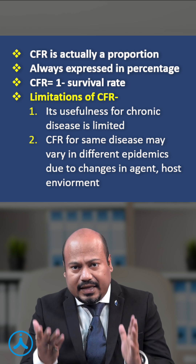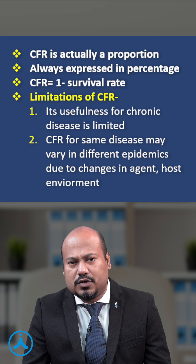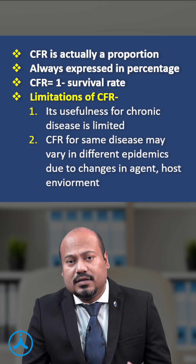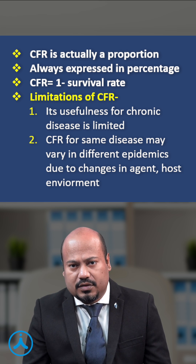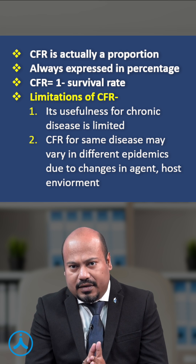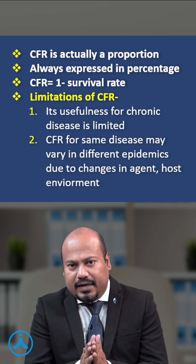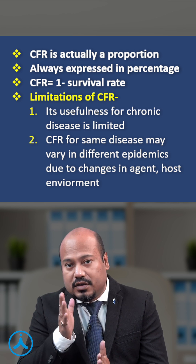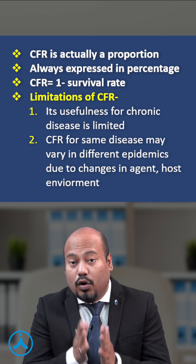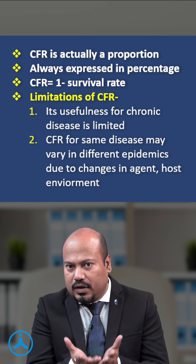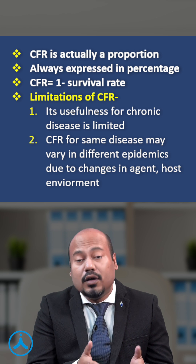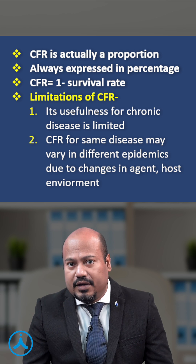What does this mean? Take the example of plague. Plague is caused by the bacteria Yersinia pestis and the vector is the rat flea Xenopsylla cheopsis. So if we take different epidemics of plague, the case fatality rate will depend on the concentration of the rodents and the rat flea. More rodents, more rat fleas, and a more unhygienic area means a higher case fatality rate.